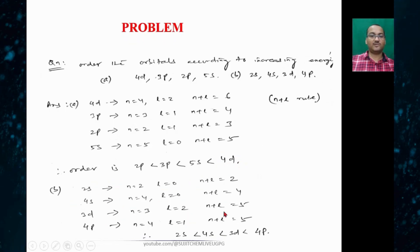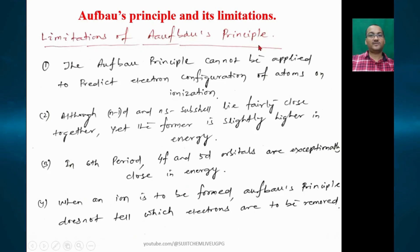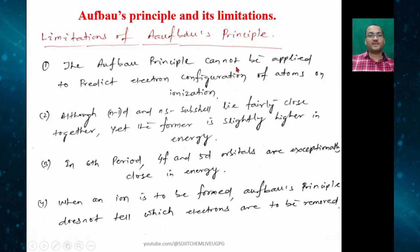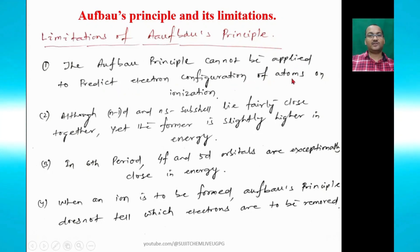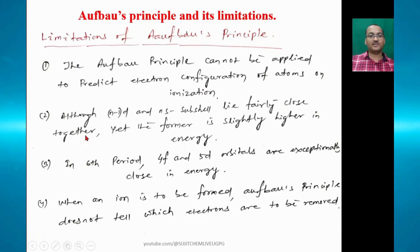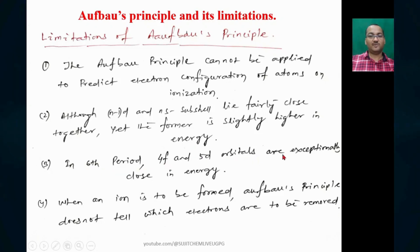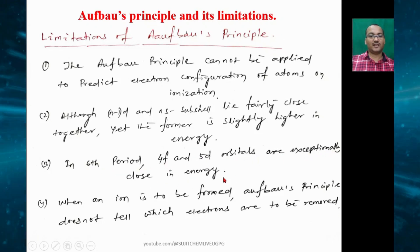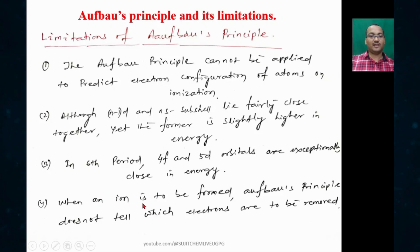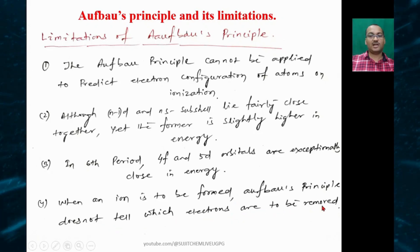Limitations of the Aufbau principle: it cannot be applied to predict the electronic configuration of atoms on ionization. Although the (n−1)d and ns subshells lie fairly close to each other in energy, the former is slightly higher. In the sixth period, 4f and 5d orbitals are exceptionally close in energy, and when an ion is formed, the Aufbau principle does not tell which electrons are to be removed.